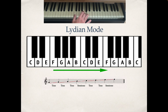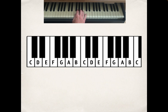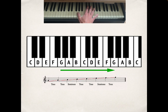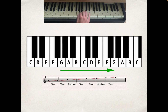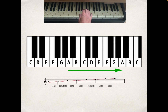Those with sharp ears will recognize that the Lydian mode is the start of the theme tune to The Simpsons — so that was written in the Lydian mode. Let's repeat it again, this time starting on G. You can feel how we want to sharpen that F, but it's not sharpened — and that is the Mixolydian mode. Now let's repeat the process again, this time starting on A.